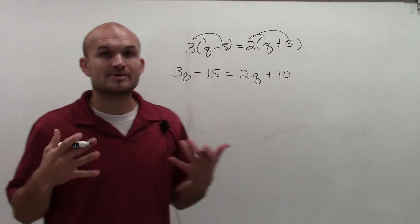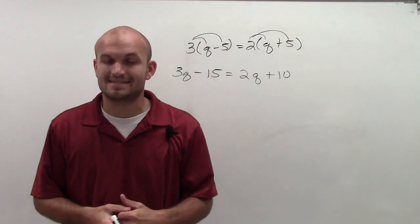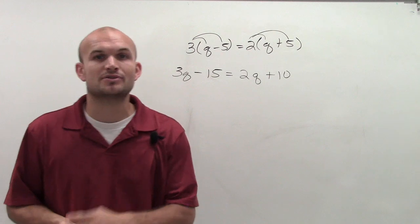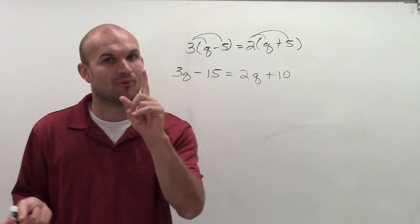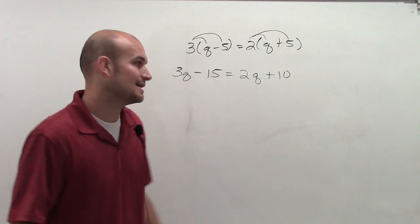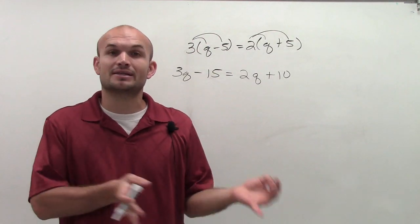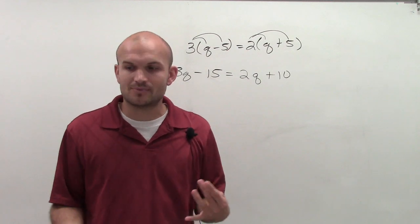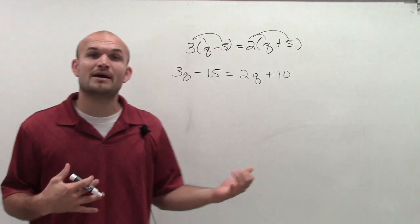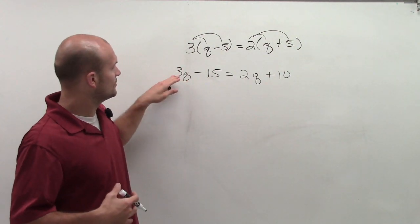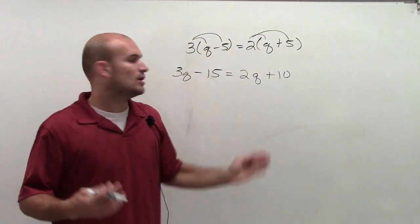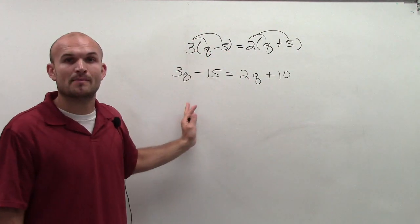So now I have a q on both sides. When using inverse operations, we only want to work from one variable — not multiple, but one. So I need a way to get my q's on the same side. I'm going to decide to get my q's either on the left side or the right side. Usually I think about which will produce the smaller variable value. I have 3q and 2q, and multiplying by 2 is smaller than multiplying by 3.